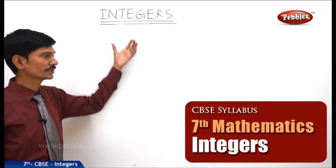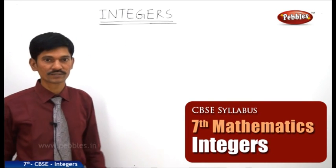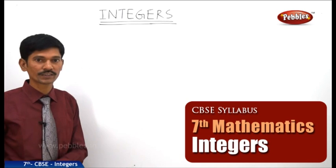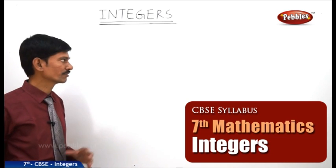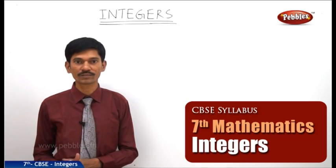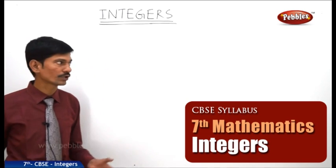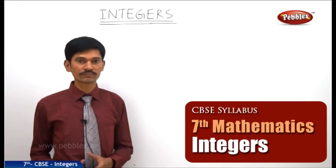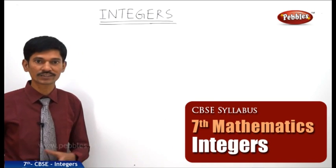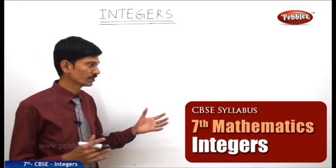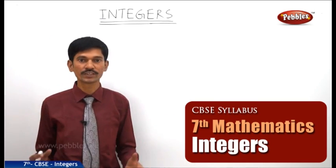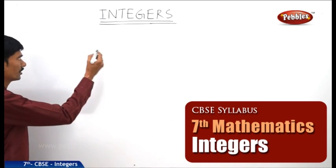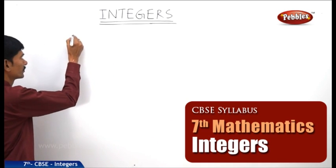Let us discuss the topic integers. Before going to integers, let us revise the concept of natural numbers and whole numbers. The numbers which we use to count things are naturally 1, 2, 3, 4 and so on. These numbers are called natural numbers.